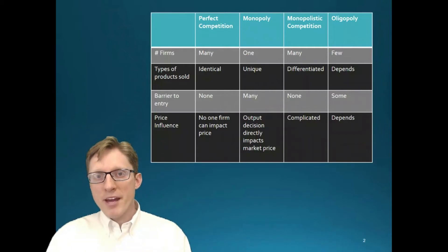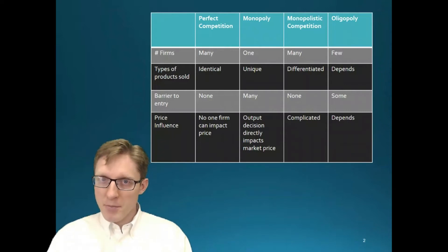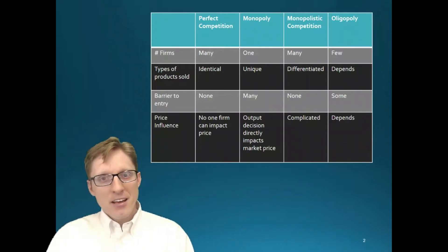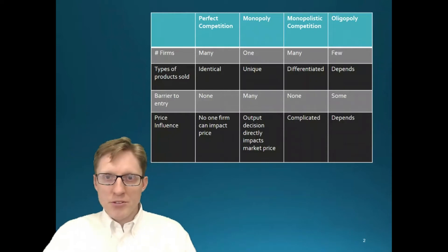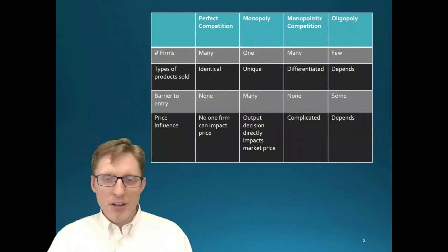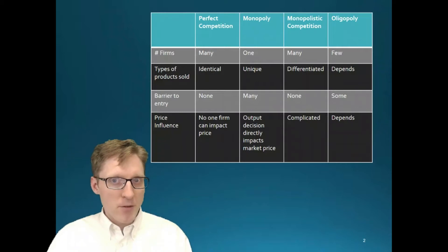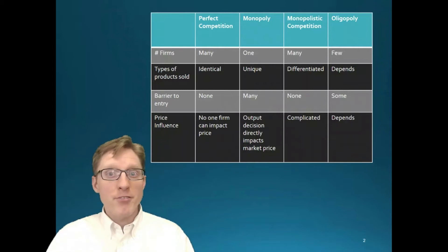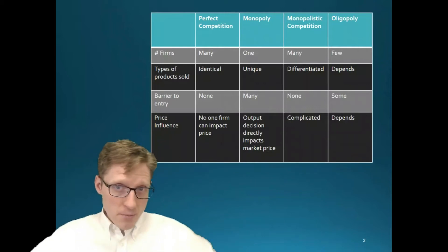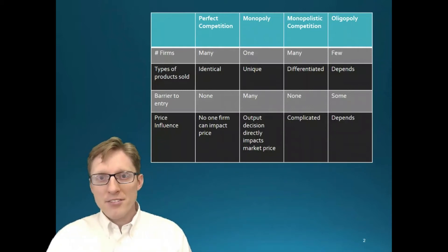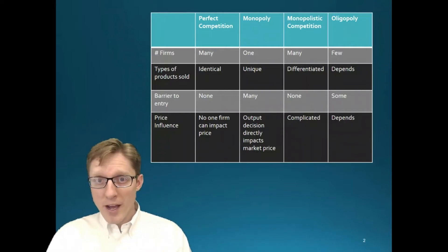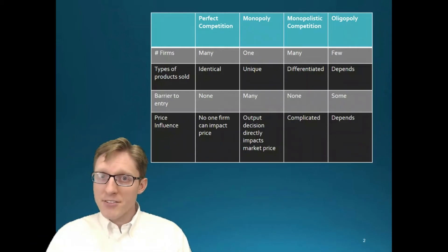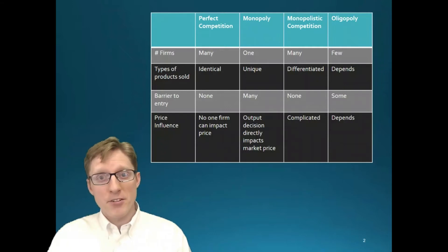In a perfectly competitive market, no single firm can impact the price. If one firm tries to raise the price, consumers will just buy from other firms and another firm will enter to replace that demand. So if any firm tries to raise its price above the prevailing market price, they won't sell any. By contrast, a monopoly firm is able to impact the price through its output decision — whatever output level it chooses determines the price through the inverse demand curve.